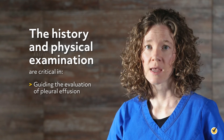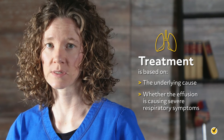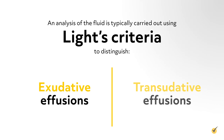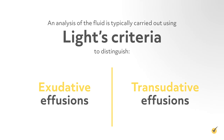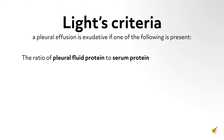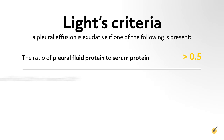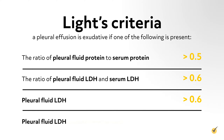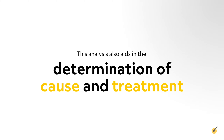The history and physical examination are critical in guiding the evaluation of pleural effusion and providing clues to etiology. Treatment is based on the underlying cause and whether the effusion is causing severe respiratory symptoms. An analysis of the fluid is typically carried out using Light's criteria to distinguish exudative effusions from transudative effusions. According to Light's criteria, a pleural effusion is exudative if one of the following is present: the ratio of pleural fluid LDH to serum LDH is greater than 0.6, or pleural fluid LDH is greater than two-thirds the normal upper limit for serum. This analysis also aids in the determination of underlying cause and the course of treatment.